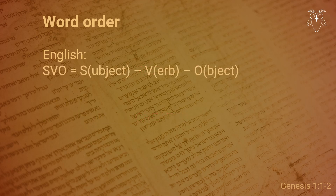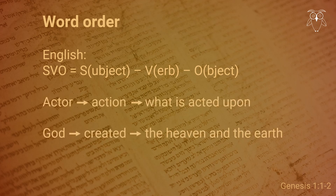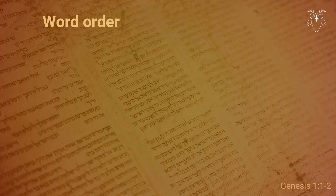In English, you put the subject — that is the actor — first, followed by the verb, and then the object — that is what is acted upon. So we get 'God,' the subject; 'created,' the verb; and 'the heaven and the earth,' the objects being created.